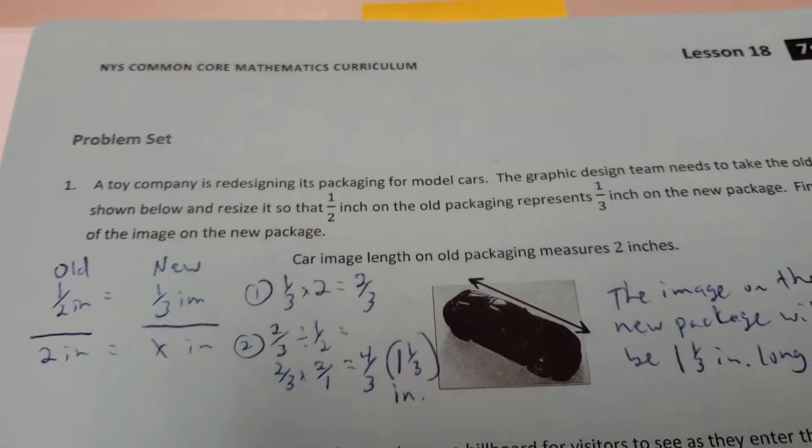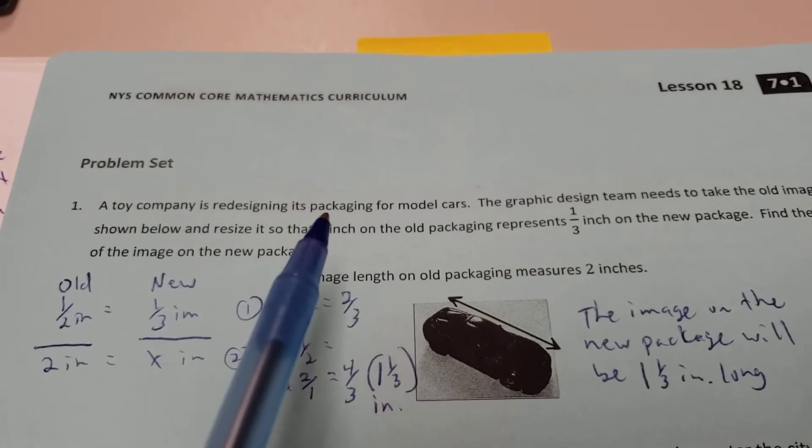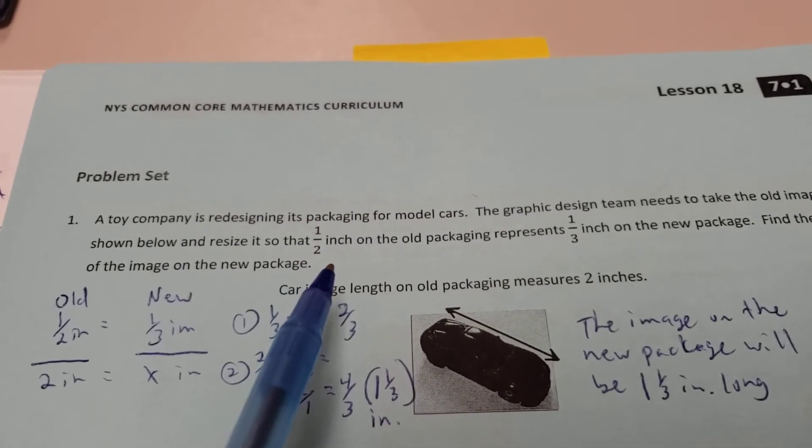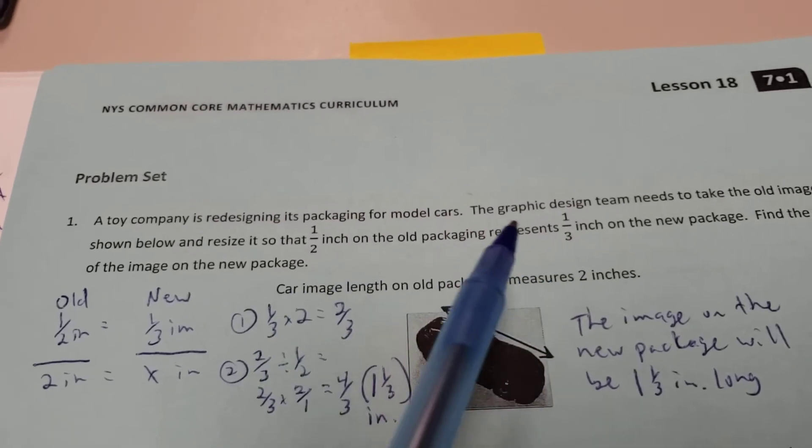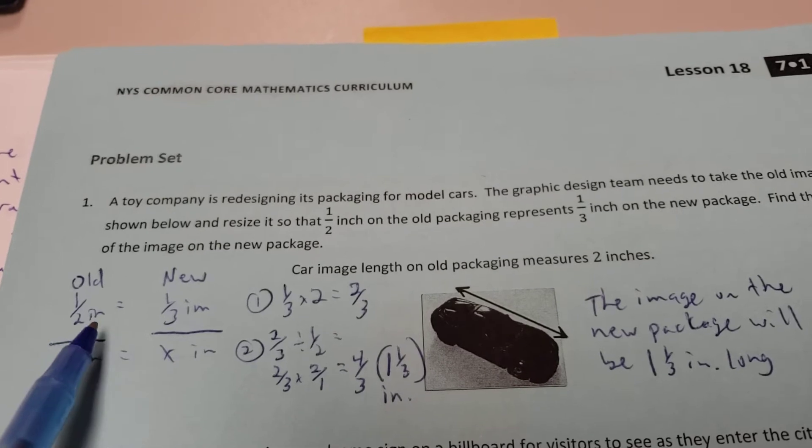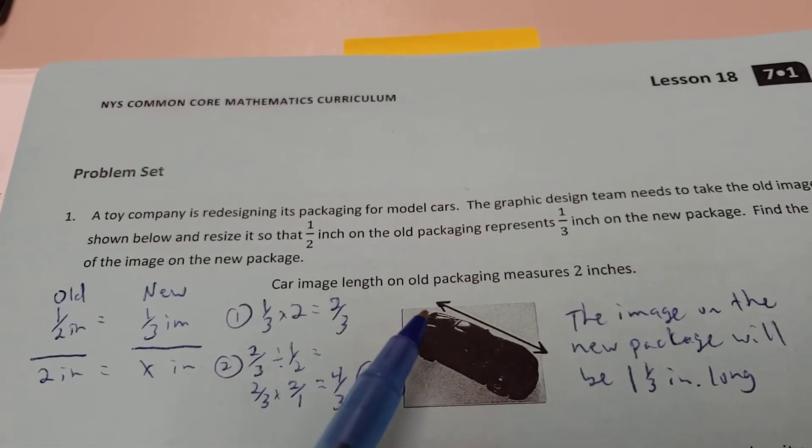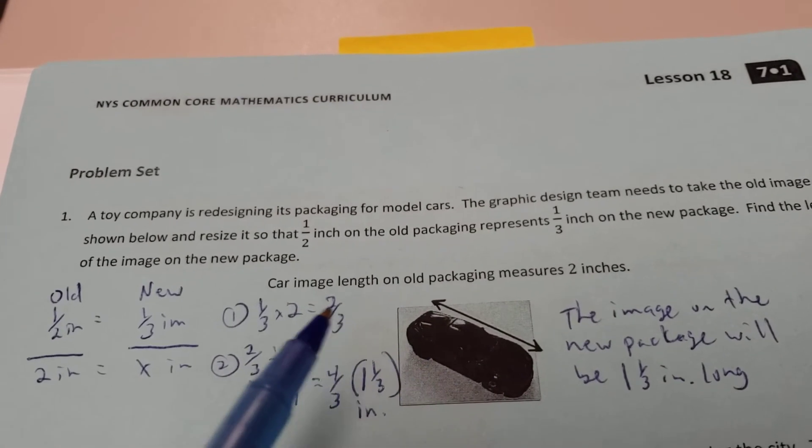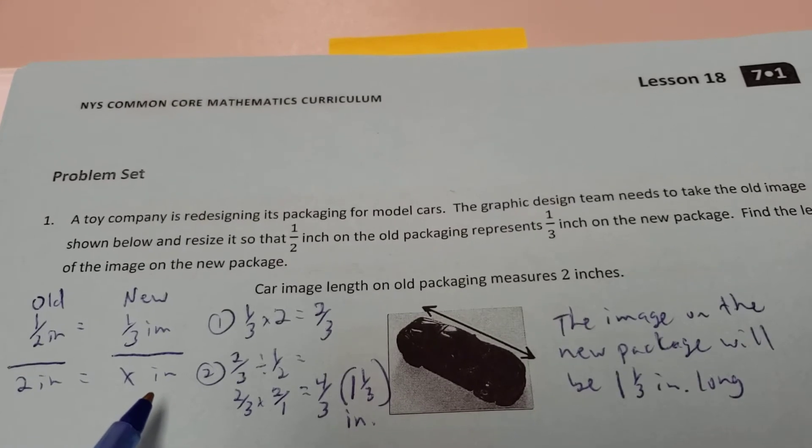Number one, we have a toy company redesigning its packaging, and the new packaging is going to be a little different than the old packaging. The half inch on the old packaging is one-third of an inch on the new packaging. So in the old packaging, a half inch will translate to a third of an inch on the new packaging. Well, it says the car length on this is going to be two inches long. So two inches translate to how much on the new package?